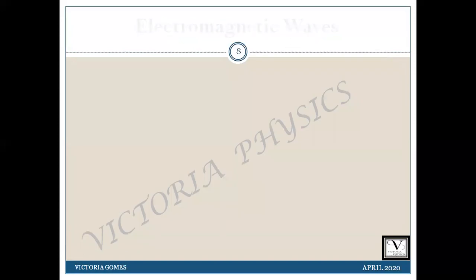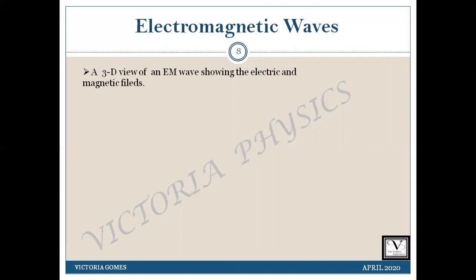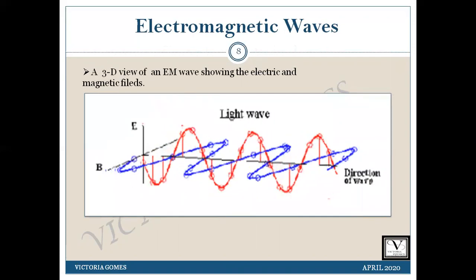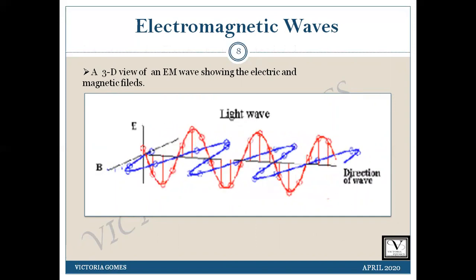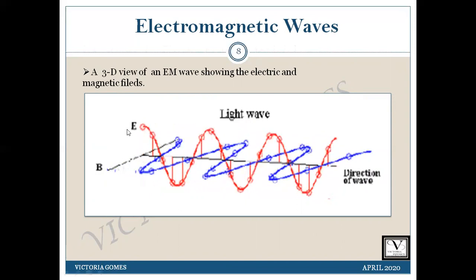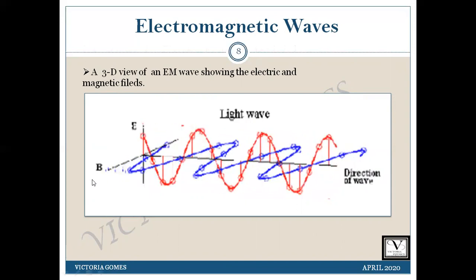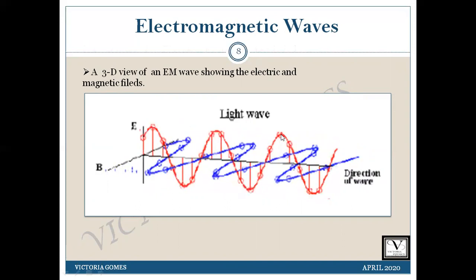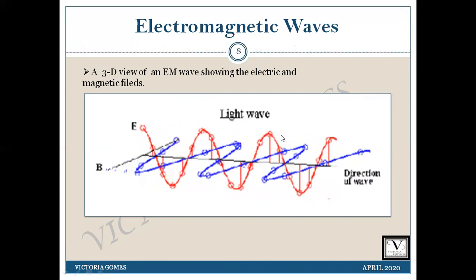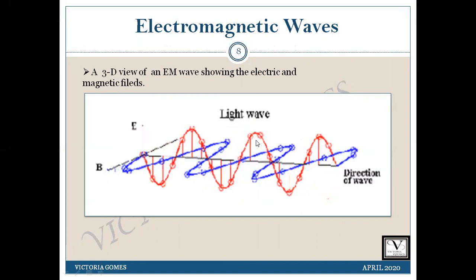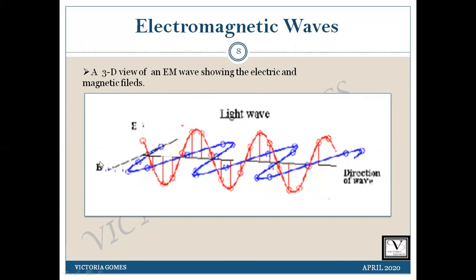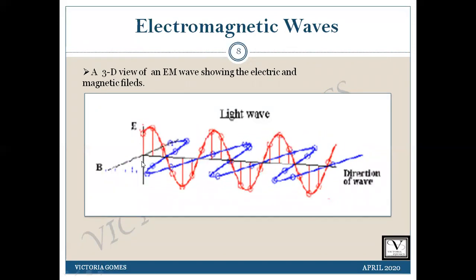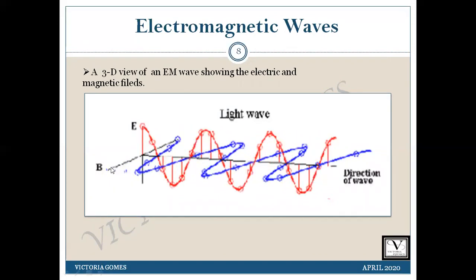Moving on to our next important topic, electromagnetic waves. We have a very beautiful picture over here that will explain electromagnetic waves. It is a three-dimensional view of an EM wave showing the electric and magnetic fields. Light is an electromagnetic wave, which is an alternating oscillation of the electric and magnetic fields. Thus, a beam of light is a traveling wave of electric and magnetic fields.